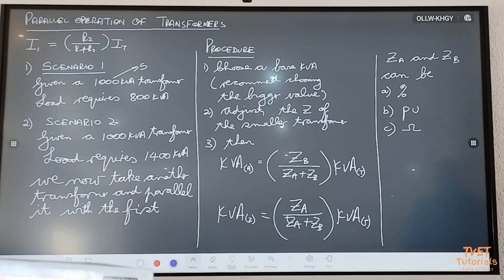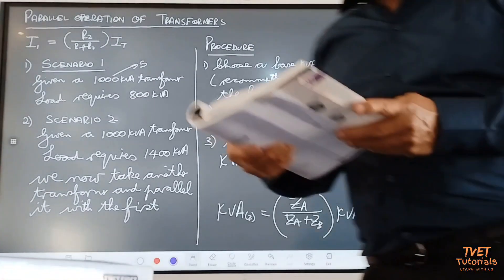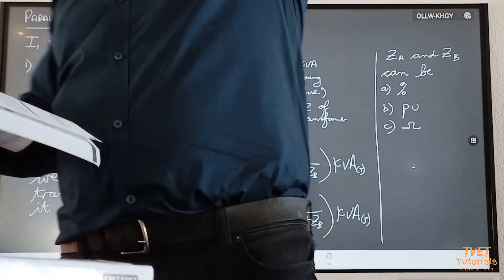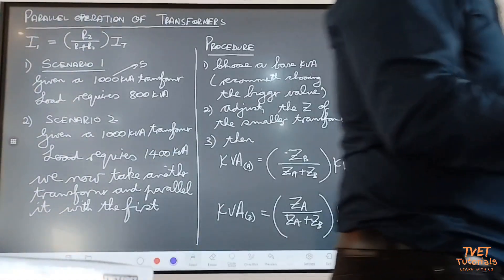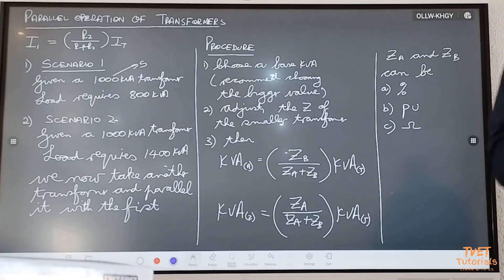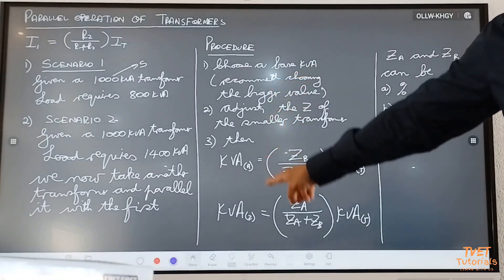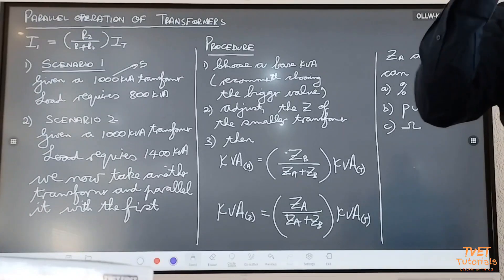Second important point: when both transformers have the same kVA rating, use the impedance as given. When the two transformers have different kVA ratings, choose a base kVA. One transformer was 1,000, the other was 500 — which one did I choose? The bigger one. Is that a rule? No — you decide. I recommend choosing the bigger value, but it doesn't matter.